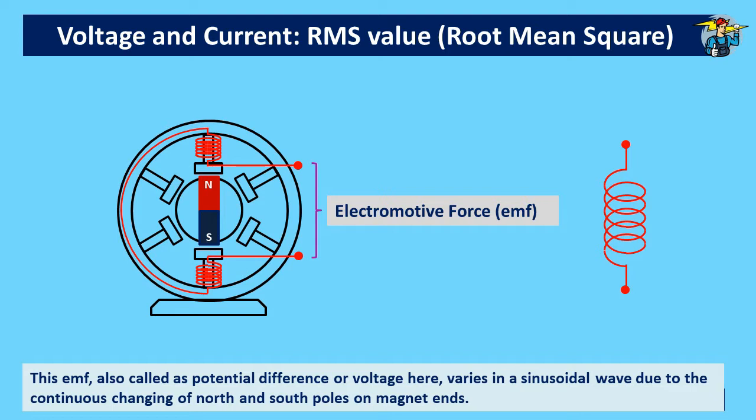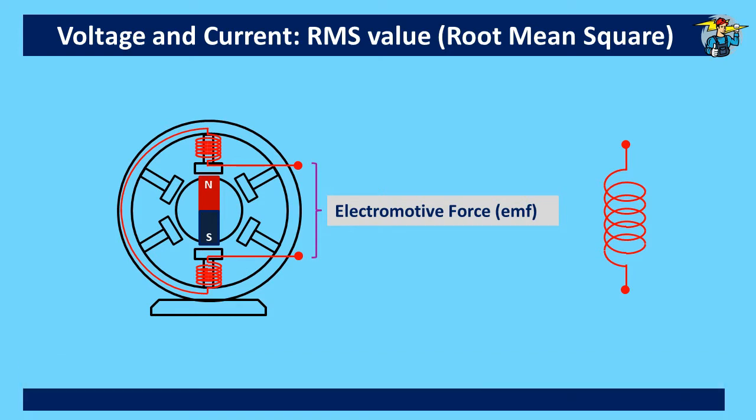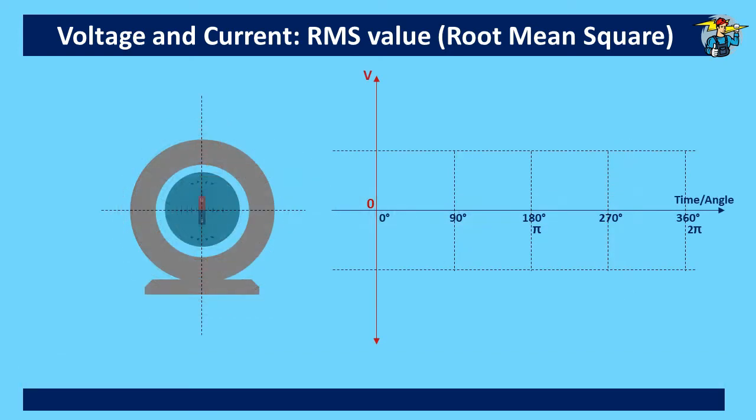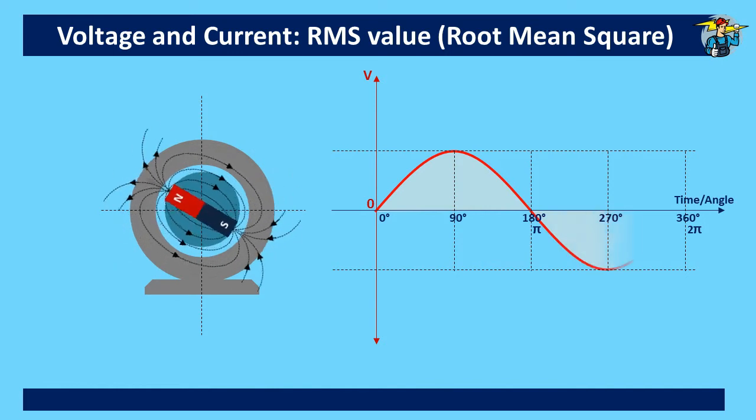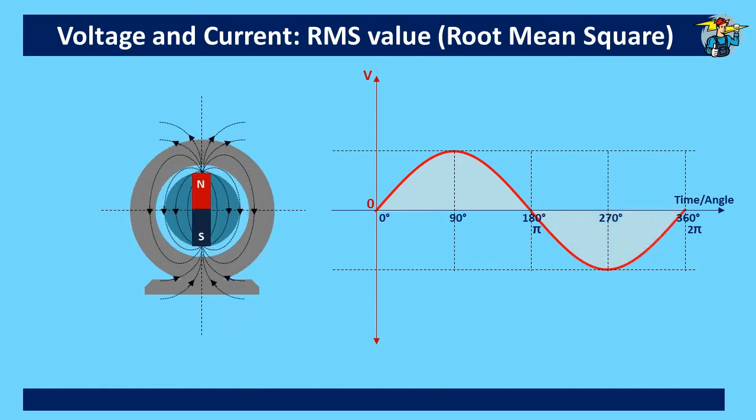a sinusoidal waveform due to the continuous changing of north and south poles of the magnet. The magnetic flux path is from north to south always. When the magnetic field rotates, EMF is generated and its maximum value is reached when magnetic flux is at 90 degrees angle with the coil wound pole pair.